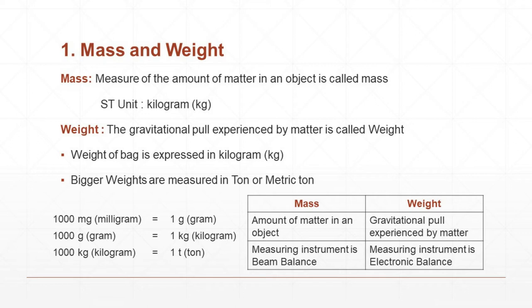Next one, measuring instrument is beam balance. If you want to measure the mass, we are using an instrument called beam balance. Measuring instrument is electronic balance. If you want to know the accurate weight of an object, we are using the instrument electronic balance.